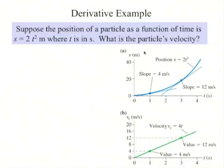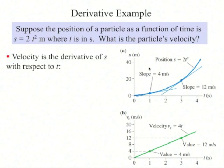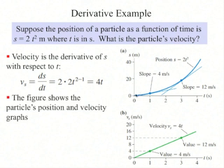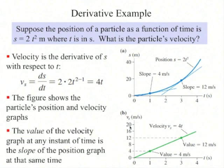Let's do a quick example. Suppose the position of a particle as a function of time is given by 2t² meters, where time is in seconds. Using the rules of calculus, the function for velocity is v = 4t. The position versus time graph is a curve, t squared, and the velocity versus time graph is a straight line, 4t. For any point on the velocity graph, the velocity gives the slope of the position versus time graph at that same time. Here the value is 12 meters per second at 3 seconds, and the slope is 12 meters per second at 3 seconds.